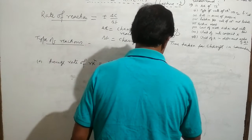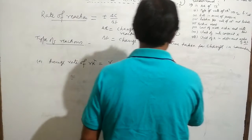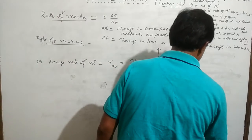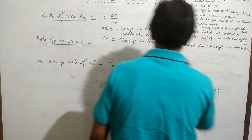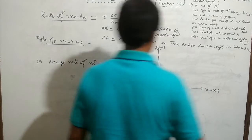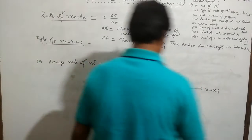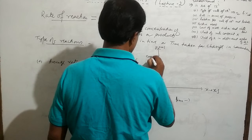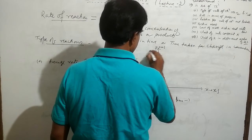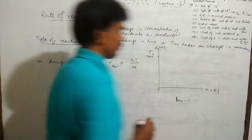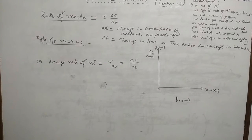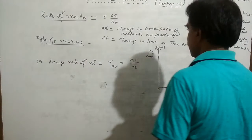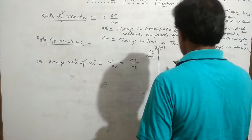For the concentration versus time graph, the x-axis is time and the y-axis is concentration. As we know, if the time increases, concentration of the reactant decreases. So regarding the concentration of the reactant, the concentration versus time graph will appear like this.